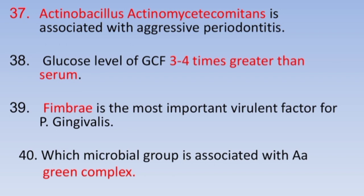Actinobacillus actinomycetemcomitans is associated with aggressive periodontitis. The glucose level of GCF is three to four times greater than serum. Fimbriae is the most important virulence factor for Porphyromonas gingivalis.